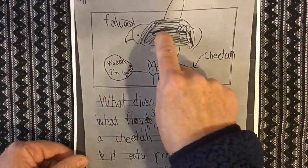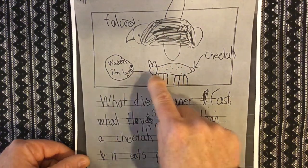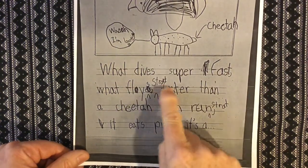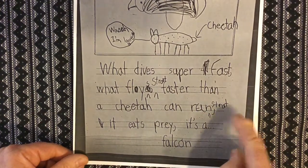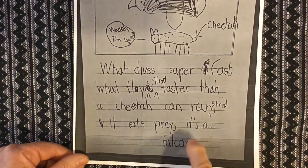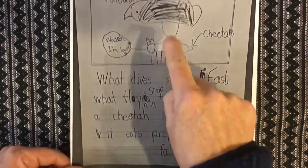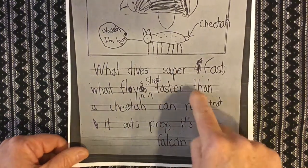And finally, this is from a book about falcons. At the top we can see a falcon drawing, and oh — there's a cheetah. The introduction reads: 'What dives super fast? What flies straight, faster than a cheetah can run? What eats its prey? It's a falcon.' I get why there was a cheetah there — it's because the falcon can go faster than a cheetah. Again, it's got questions and it's all action-packed.